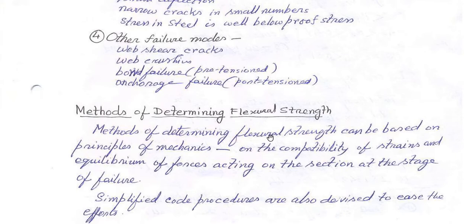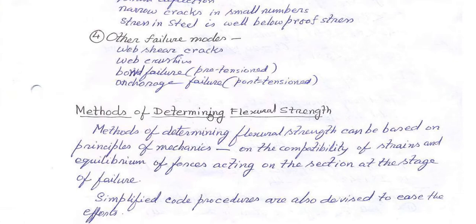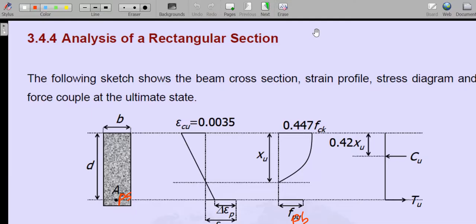To determine flexural strength there are different methods. One is based on the principle of mechanics — compatibility of strain and equilibrium of forces acting on the section at the stage of failure. We will use the assumption that plane sections remain plane before and after bending, and derive equations to find the flexural strength at ultimate load. There are also simplified code provisions used to determine flexural strength, and we will solve numericals using these simplified methods.